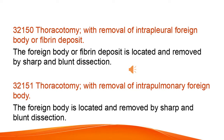Thoracotomy with removal of intrapleural foreign body or fibrin deposit. The foreign body or fibrin deposit is located and removed by sharp and blunt dissection. Thoracotomy with removal of intrapulmonary foreign body — the foreign body is located and removed by sharp and blunt dissection.